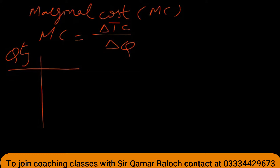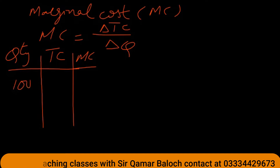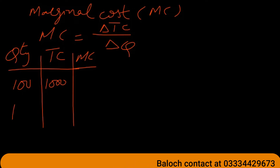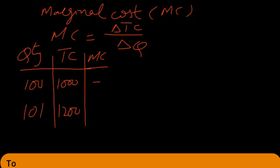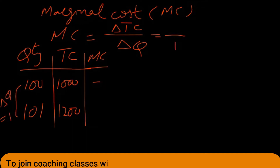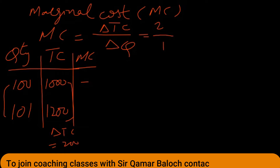Let's say we are producing a certain quantity of a good or service and we have the total cost. We can add one more column for marginal cost. For example, initially if a firm was producing 100 units and its total cost was $1,000, and it then produces one additional unit bringing total cost to $1,200, marginal cost is change in total cost over change in quantity: $200 divided by 1 equals $200.